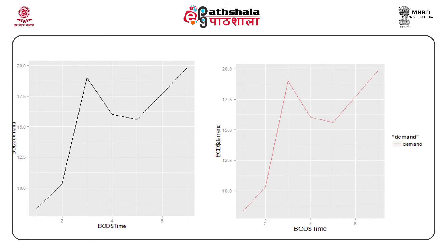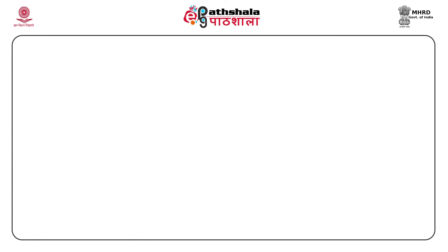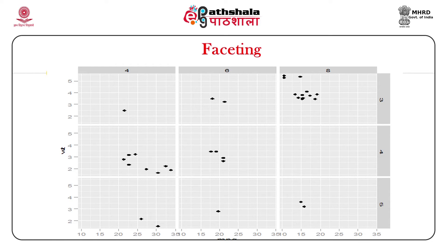If you want to colour the plot, the next plot will serve the purpose. We have already discussed using aesthetics like colour and shape to compare subgroups by drawing all groups on the same plot. Faceting primarily creates tables of graphics by splitting the data into subsets and displaying the same graph for each subset. The advantage is that this helps in the work of comparison. Have a look at the plot.